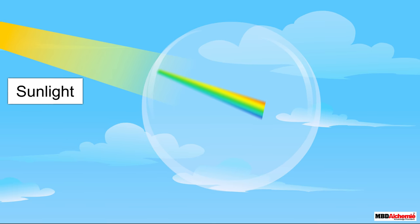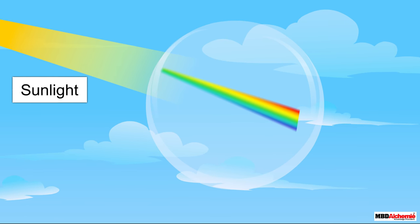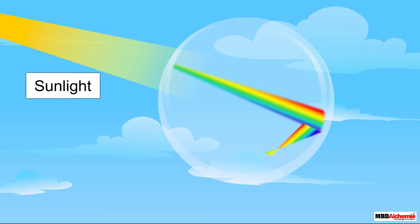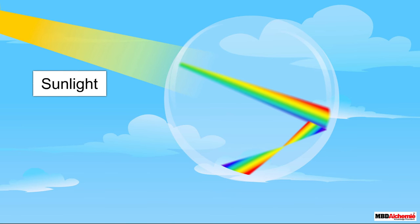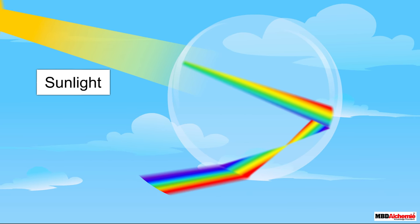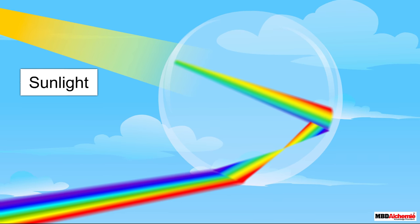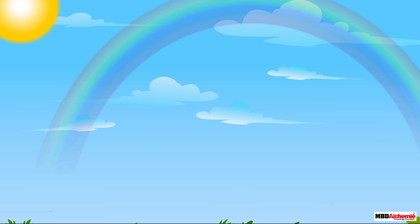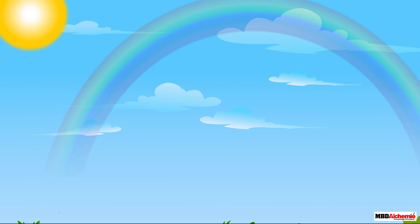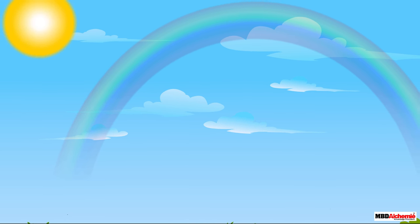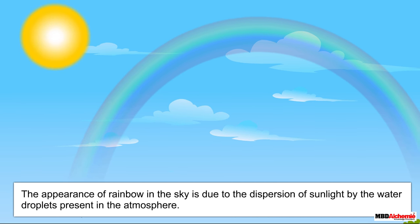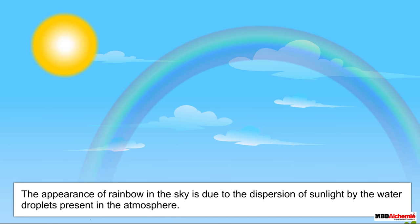As soon as sunlight enters the droplet, it splits into its constituent seven colors. When this band strikes the other edge of the drop, it gets reflected internally towards the first edge, where it gets refracted again and finally comes out of the raindrop. This band of colors coming out of the raindrop is what we see as a rainbow. A rainbow is always formed in the direction opposite to that of the sun.